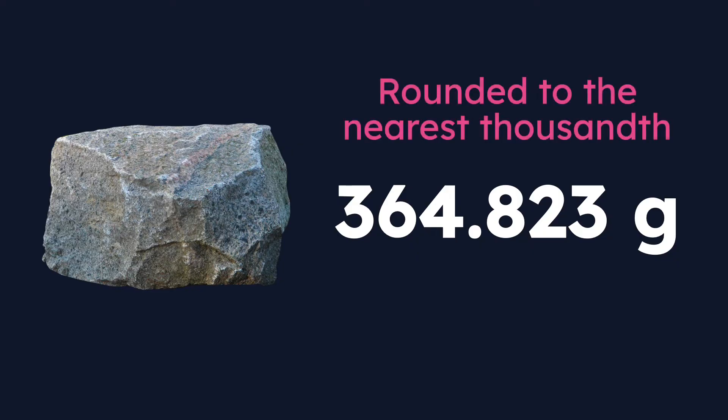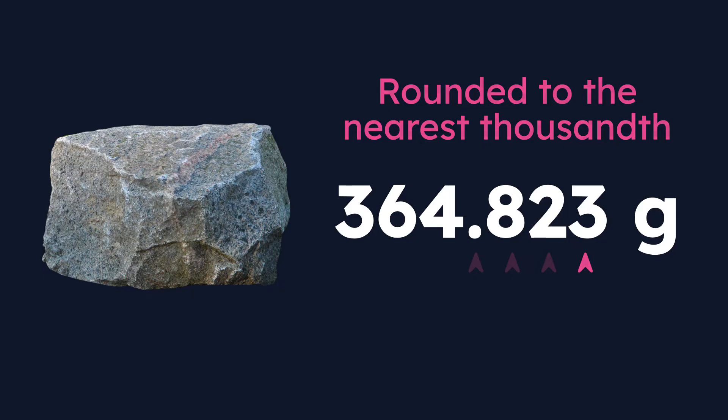We'll start with an example where we round this to the nearest thousandth. Now, if you know about this, you might say to yourself: well, it's already to the nearest thousandth. And in fact, that is correct — the nearest thousandth means three places past the decimal point. One, two, three places past that decimal point. So that number, as is, is already rounded to the nearest thousandth.